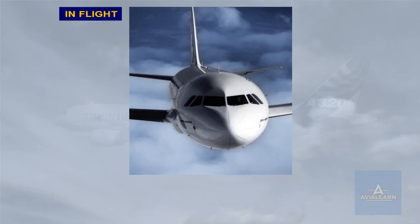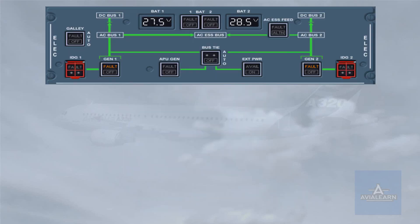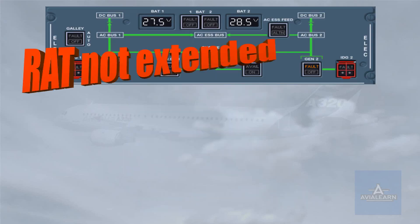We will now review some indications we did not have the opportunity to see when performing the previous procedures. As a result of the electrical failure, the RAT is normally automatically deployed. During the RAT extension, the electrical system is powered from the batteries. The approximate flight time on batteries is 20 minutes.